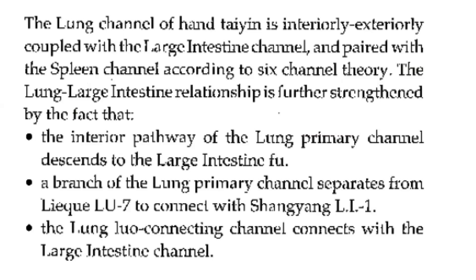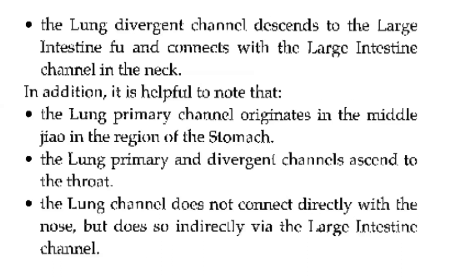The lung-large intestine relationship is further strengthened by the fact that the interior pathway of the lung primary channel descends to the large intestine. A branch of the lung primary channel separates from lung 7 to connect with LI1. The lung luo-connecting channel connects with the large intestine channel. The lung divergent channel descends to the large intestine and connects with the large intestine channel in the neck. It is helpful to note that the lung primary channel originates in the middle jiao in the region of the stomach. The lung primary and divergent channels ascend to the throat. The lung channel does not connect directly with the nose, but does so indirectly via the large intestine channel.